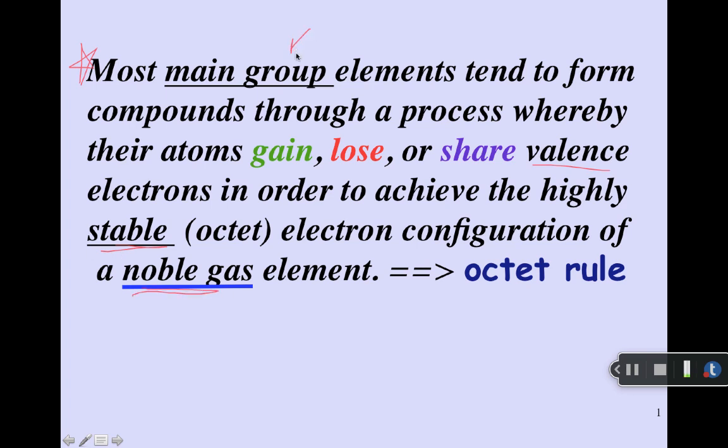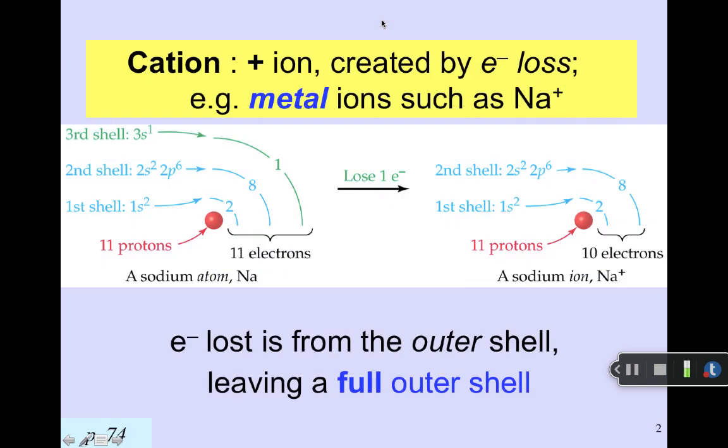Now, remember that main group element is groups 1A to 8A. Somebody was not clear about that, perhaps, and ignores all the transition elements. We won't try to describe them, and they won't necessarily obey an octet rule.